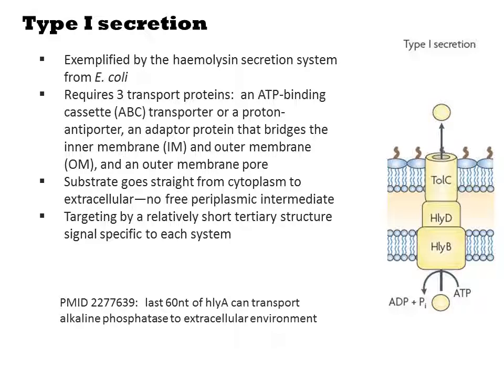Type 1 systems are typified by the hemolysin secretion system from E. coli. Adding this functionality to E. coli requires three transport proteins: an ATP-binding ABC transporter, an adapter protein that bridges both the inner and outer membranes, and an outer membrane pore. Secretion through this apparatus doesn't involve any periplasmic intermediate — the protein is shuttled straight through the channel. The targeting signal is a short 20-amino acid peptide on the C-terminus of the protein. A reference shows that the last 60 nucleotides of HLYA are a sufficient targeting signal to transport alkaline phosphatase to the extracellular environment.